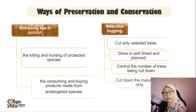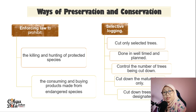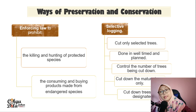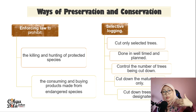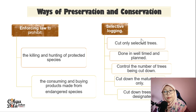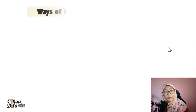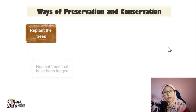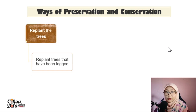In selective logging, we cut down mature trees only, and only in designated areas — not beyond that. Mature trees that are ready to be cut can be cut, but young plants should not be cut. That is what selective logging means.